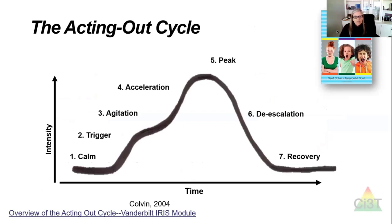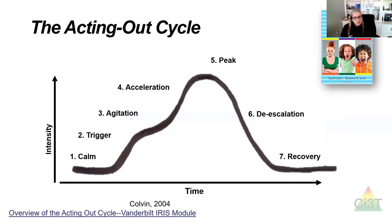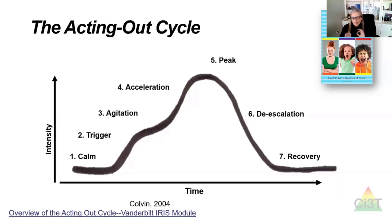This is the acting out cycle — these seven stages we're going to talk about tonight. We want to talk about what they look like, practices we can use to support kids when we see them in one of those stages, and also things like safety and respectful recovery when students actually do get to the point of escalated behavior. The acting out cycle has a module in the IRIS Center — we encourage you to use that as an additional resource. This work is based on Jeff Colvin and Terry Scott, and there's a book in the corner that's a great resource for a book study with your faculty.